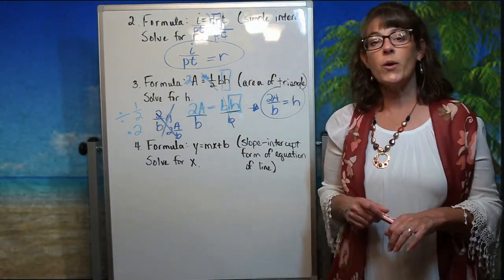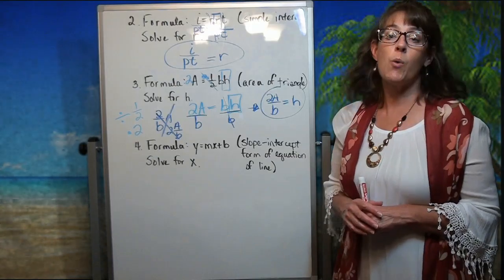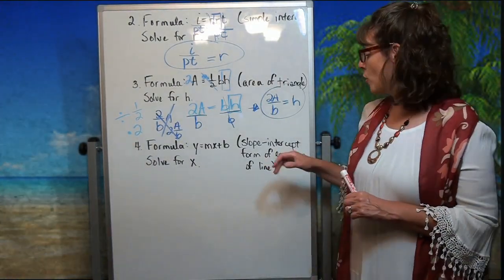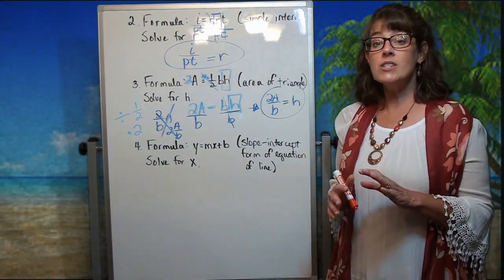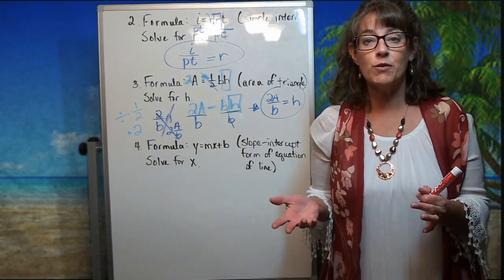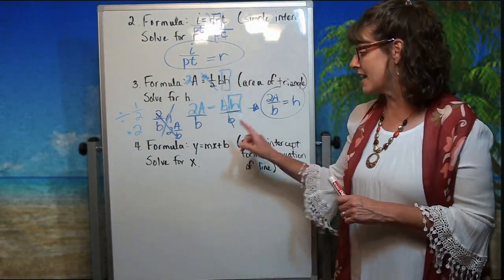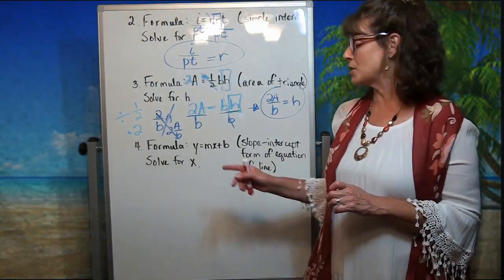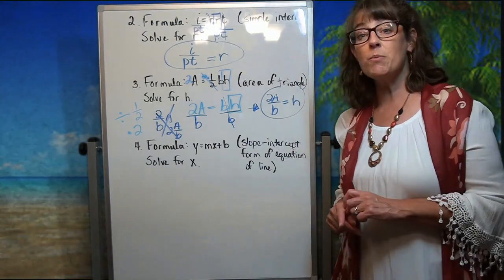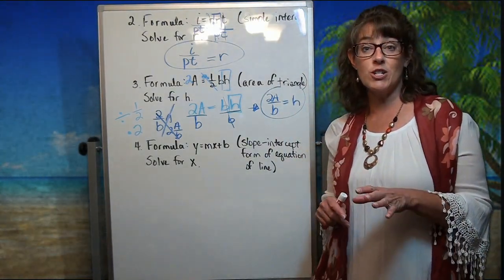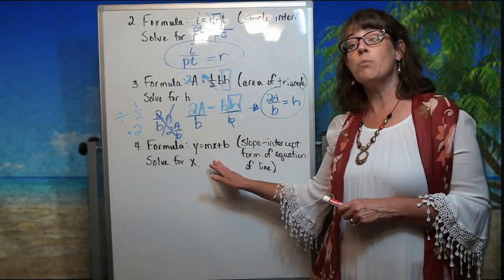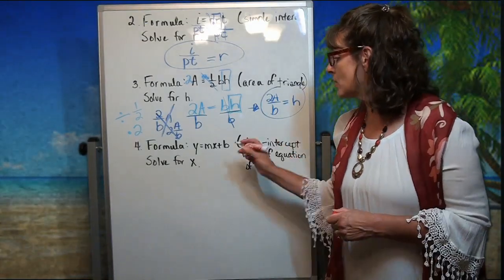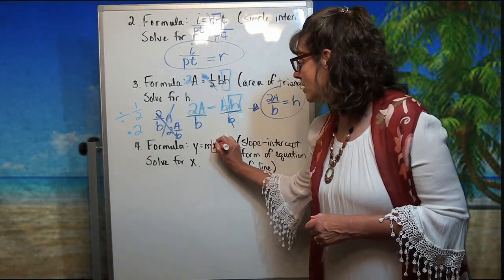This formula says y equals mx plus b — the slope-intercept form of the equation of a line. Note: this is not the formula for slope; the formula for slope is subtract your y's on the numerator and subtract your x's on the denominator. What's really important right now is we need to get x completely by itself.